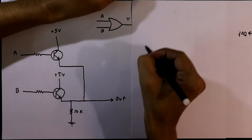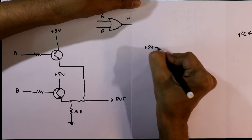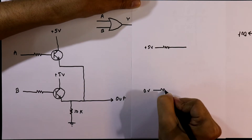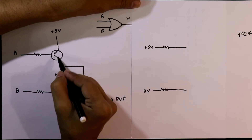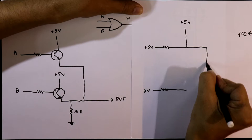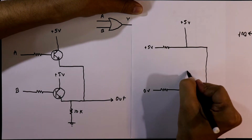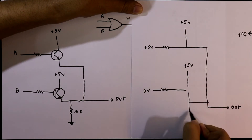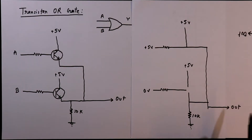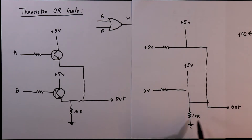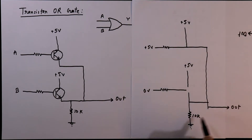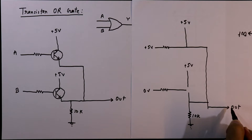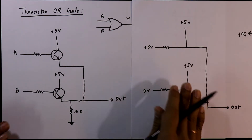For the second condition we are applying 1, which is 5V, to A and 0V to B. Now the first transistor is working as a closed circuit, and the second transistor is working as an open circuit. We have a pull-down resistor connected. In this circuit, the 5V is directly connected to the output, and between the output and ground there is a 10K ohms resistor. As more current is flowing through this path, we will have 5V at this point. So for input 1 and 0 we will have 1 in the output.